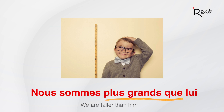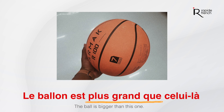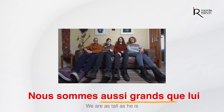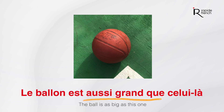Le ballon est plus grand que celui-là — meaning 'the ball is bigger than this one.' Nous sommes aussi grand que lui — meaning 'we are as tall as him.' On the case of the ball: le ballon est aussi grand que celui-là. What you should observe is that after 'plus' and 'aussi', you have the adjective followed by 'que'.